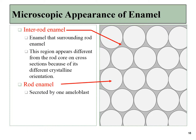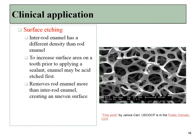The enamel of the rods is called rod enamel, but there's also enamel produced between the rods — inter-rod enamel. This is important because the density of rod enamel and inter-rod enamel is not quite the same. Therefore, if you apply an acid to the surface of a tooth, it will dissolve the rod enamel at a different rate from the inter-rod enamel, leaving the surface of the tooth bumpy rather than smooth. This bumpiness is often taken advantage of prior to adding a sealant to a tooth, because it creates more surface area for a sealant to adhere to.